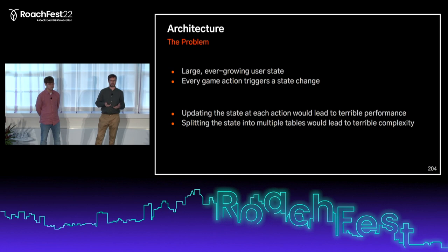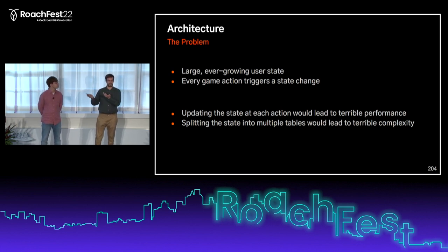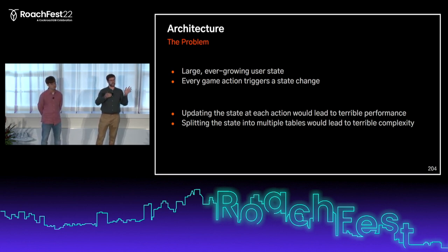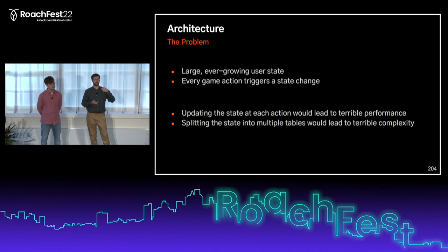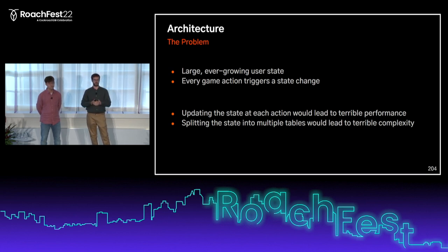Every time a user does something in the game client, a request is sent to the server. We validate the request and modify the user state. That can be receiving an item, spending some coins, constructing a building, and so on. The user state is really large — it's like an object with hundreds of fields and deeply nested other objects. If we were to update that state at every request, that would not be performant because we'd be saving a huge chunk of data every time. We also decided against splitting this data into multiple tables because there would be too many tables — very complex to maintain and evolve.